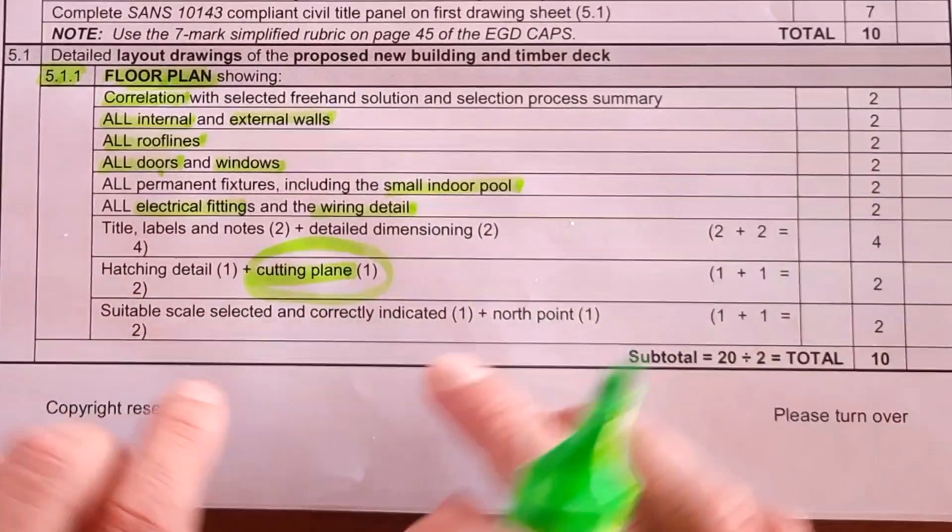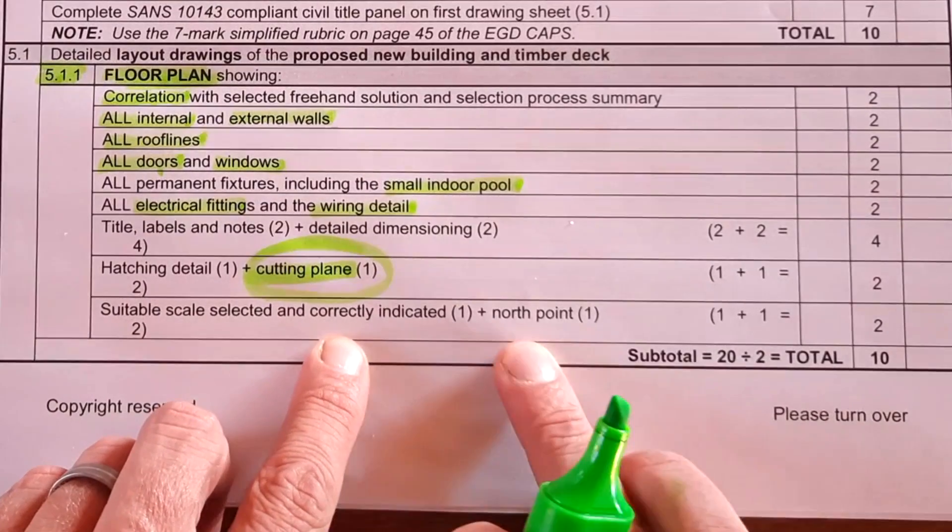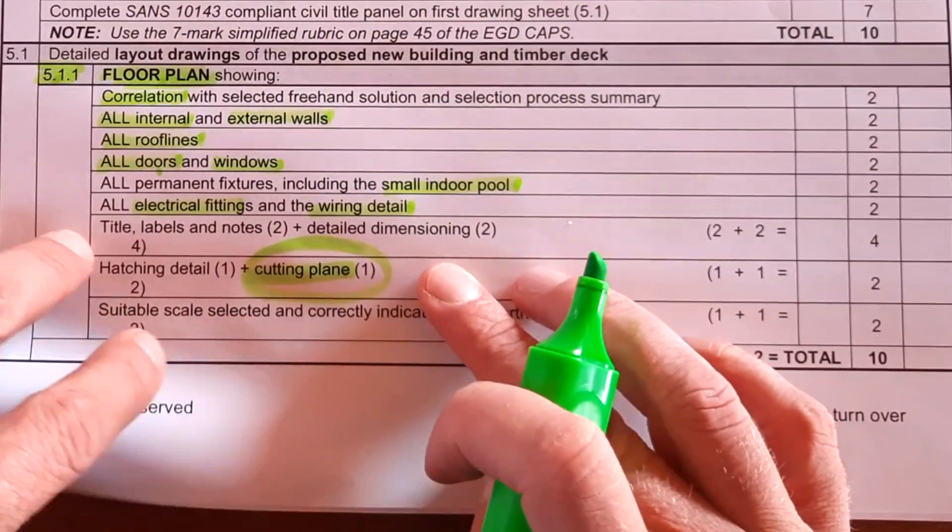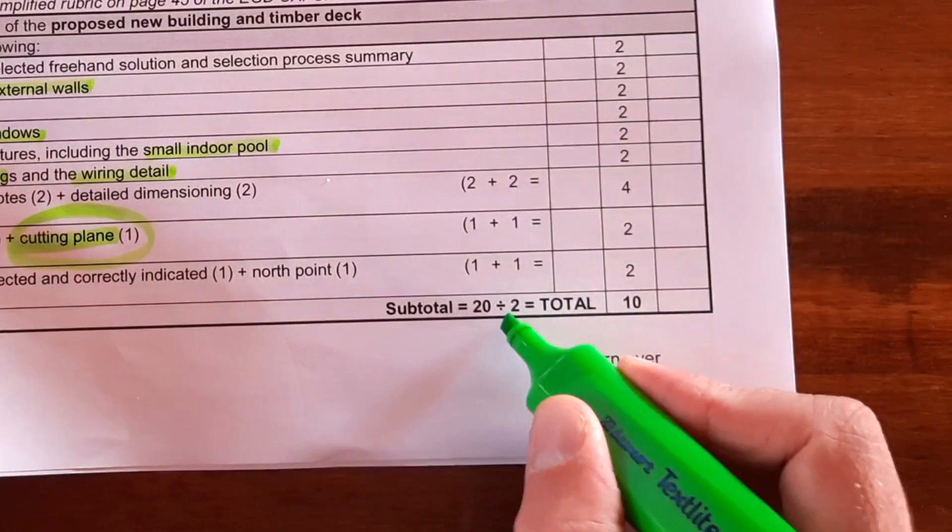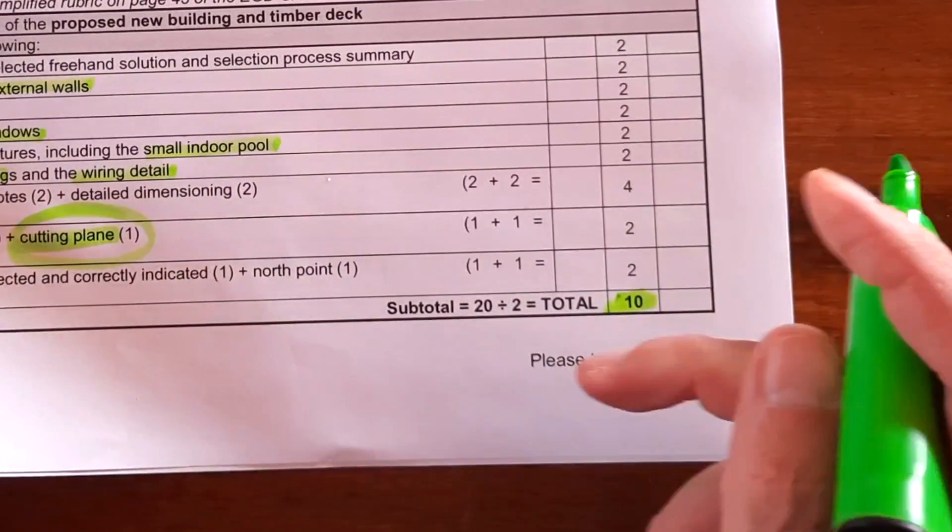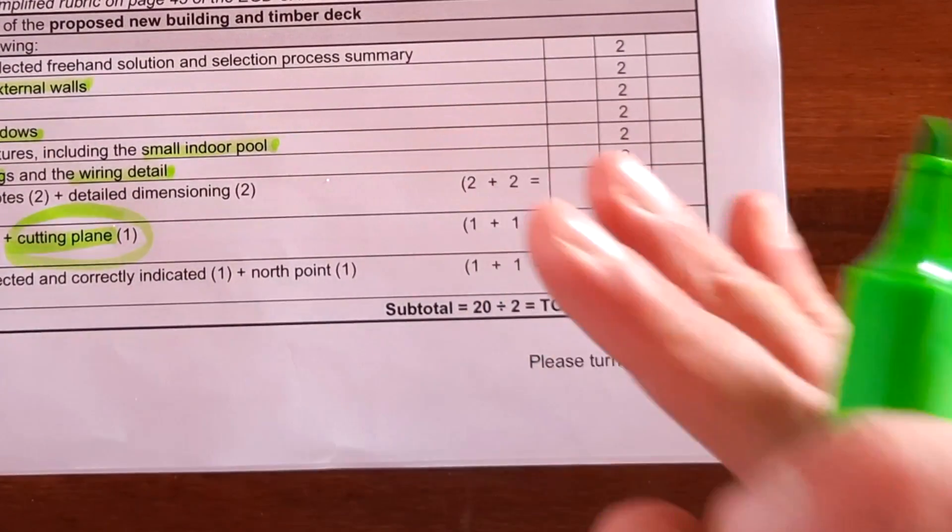And then the suitable scale selected. Did you do it 1 to 100? Did you correctly indicate it? And the north point. All of that is going to be added up and divided by two to give you a mark out of ten.